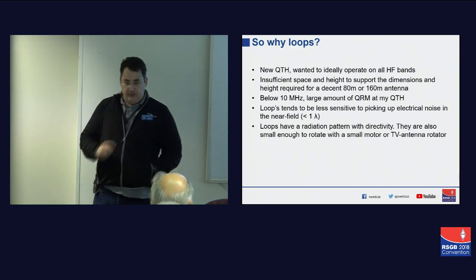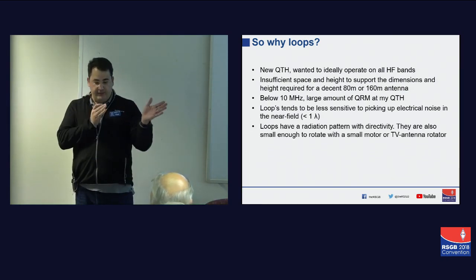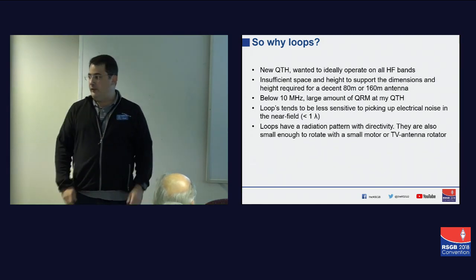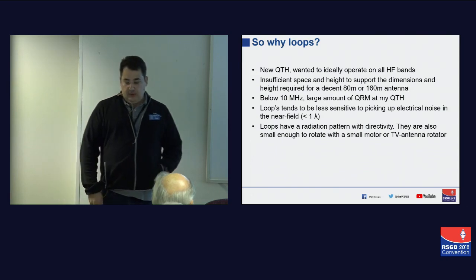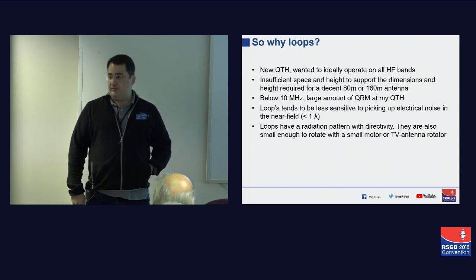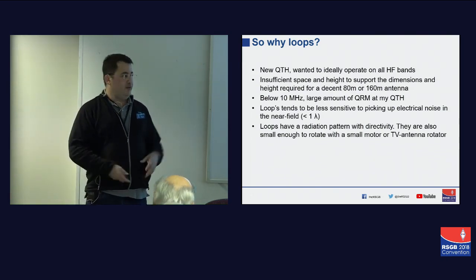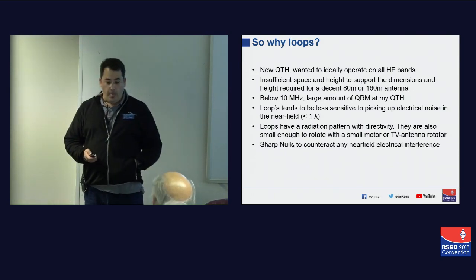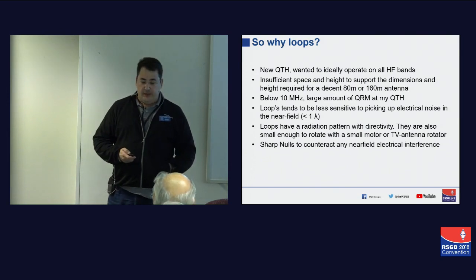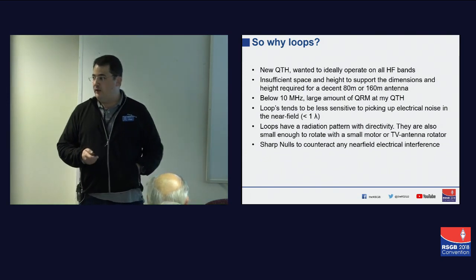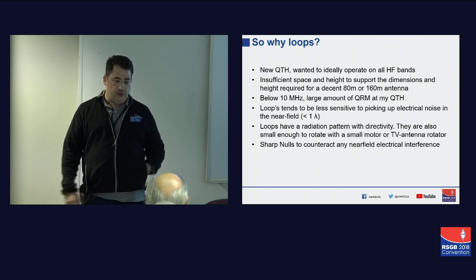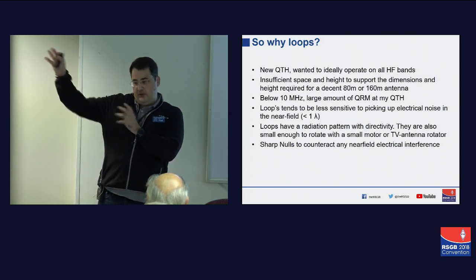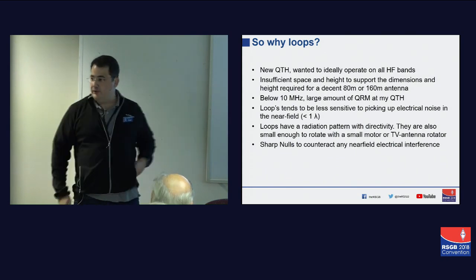I also wanted something with a little bit of radiation directivity, and something I could potentially use with a small TV antenna rotator — because there was no point in setting up an antenna system if I'd spent a lot of money on rotators. I wanted something inexpensive to get going. I also wanted something with sharp nulls which could cancel out anything in the near field with a strong interference source — some neighbors have cheap inverters for their solar panels.